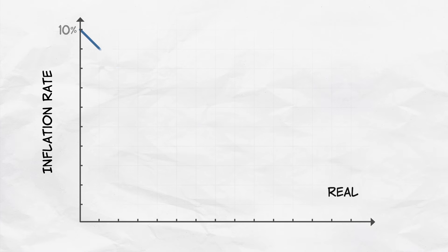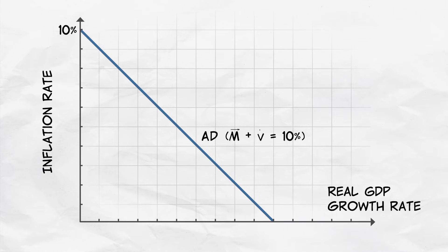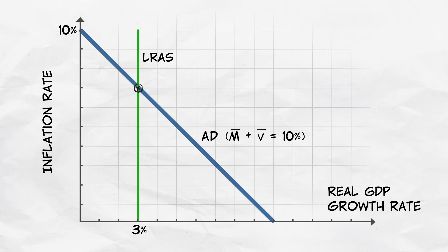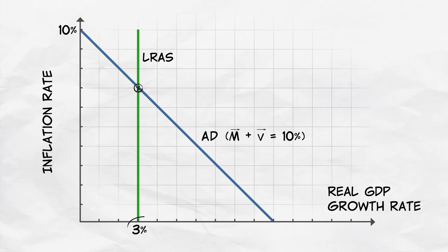That's the long run. We'll say more about the short run in a later video. We now have the aggregate demand curve and the long-run aggregate supply curve. In this specific example, notice that spending is increasing at a rate of 10% per year, and the real economy is growing at 3% per year. So inflation is 7% per year.